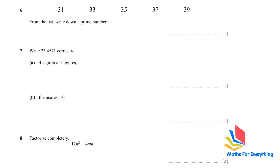Question 6: we have been given five numbers. From the list, write down a prime number. A prime number is a number which is not divisible by any other number except one and itself. Both 31 and 37 are prime numbers, so you can write them down. You can look at the video where I've explained all the different types of numbers.